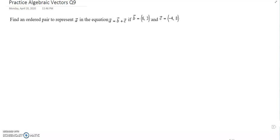Oh, we just need to add them. So find an ordered pair that represents a if a equals vector b plus vector c. We can just add these two vectors together. So 4 plus, excuse me, 6 plus negative 4 should be a 2.